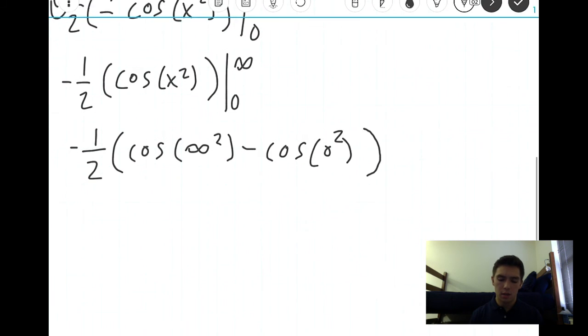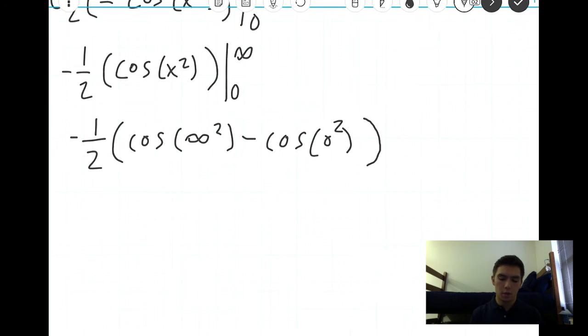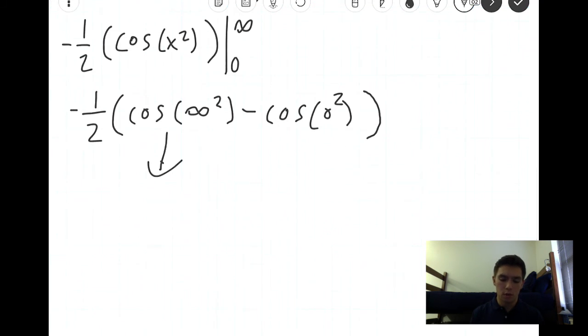But basically, what we can determine from this is the cosine of infinity squared, which is just cosine of infinity, is an interval that's negative one to one. So that's not an actual value. So no matter what this is, unless this is also cosine of infinity squared, then it doesn't really matter. It's not going to converge to a value.